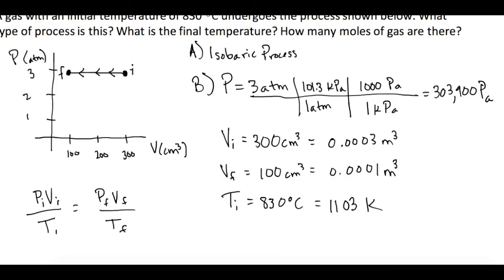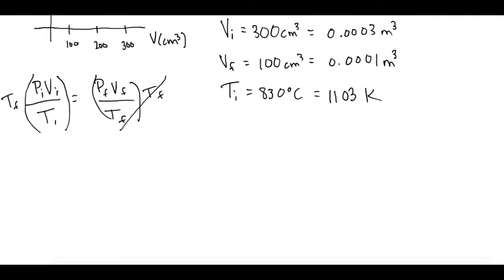All right, so now we can multiply both sides by T final. Those cancel. So now multiply all of this as one term as T final. Now, just to save myself a little bit, I'm going to treat PiVi over Ti all as one term and divide it over.